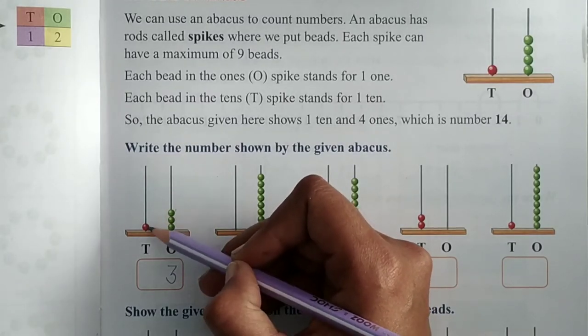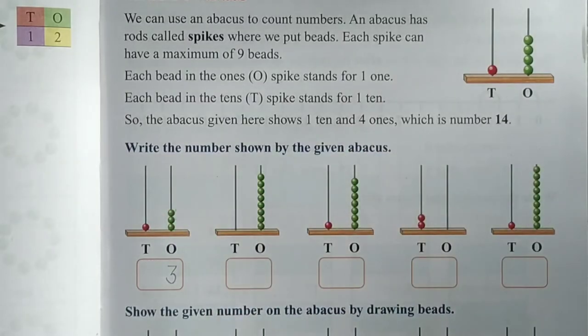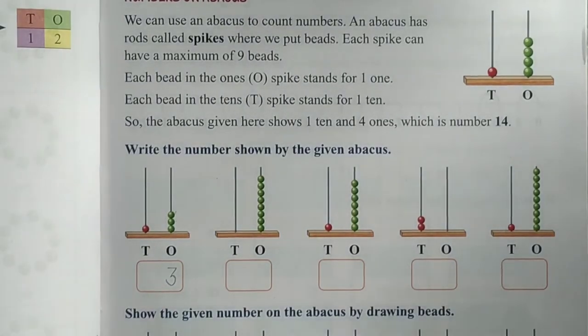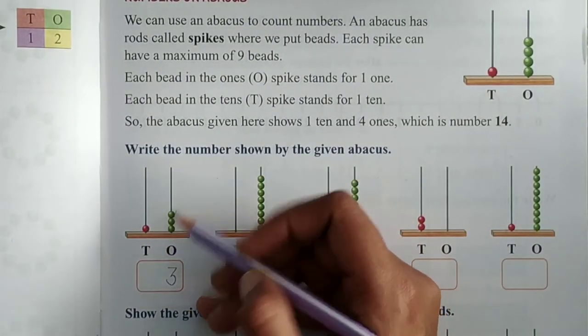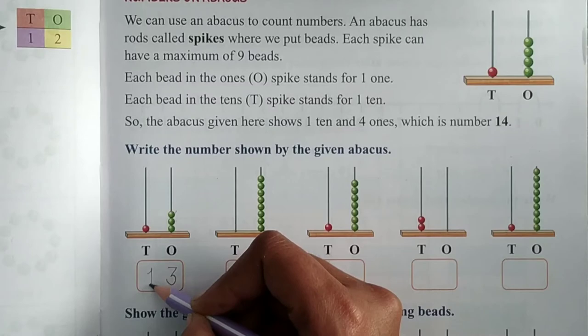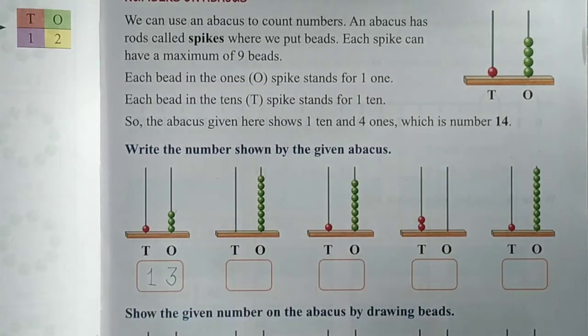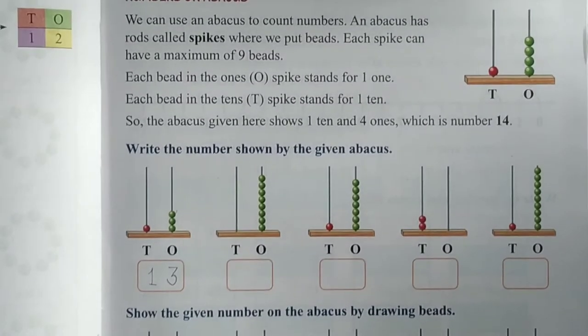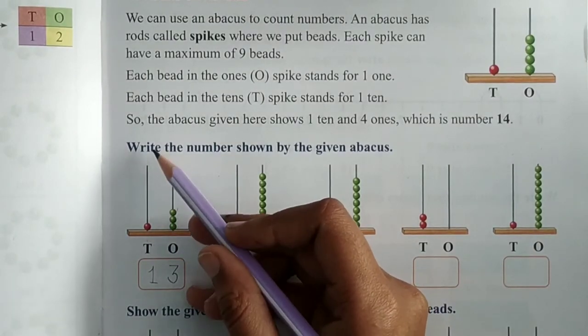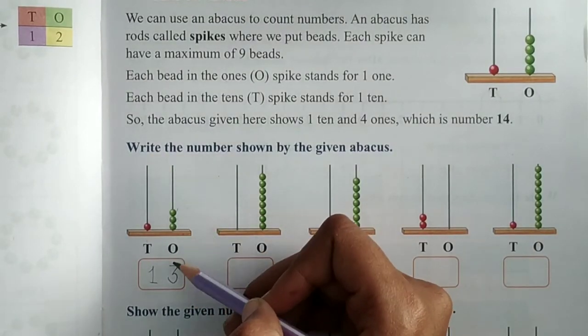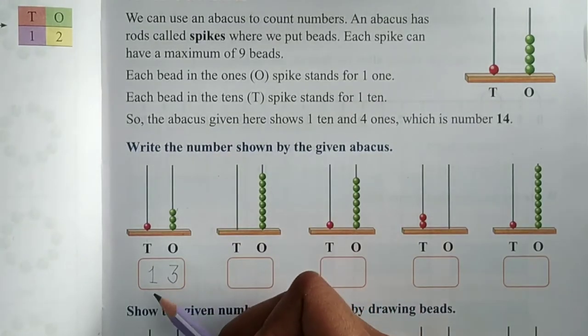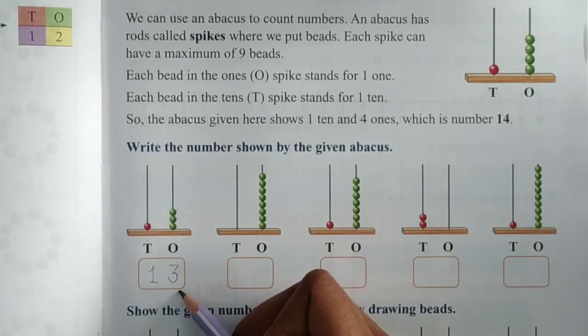Similarly, in tens, it is spike. How many beads are there? Only one. So I will write one over here. So one bead in tens spike and three beads in ones spike makes one, three, thirteen.